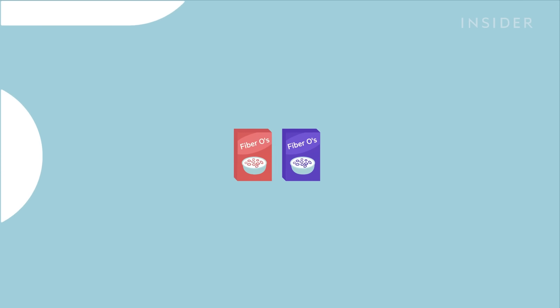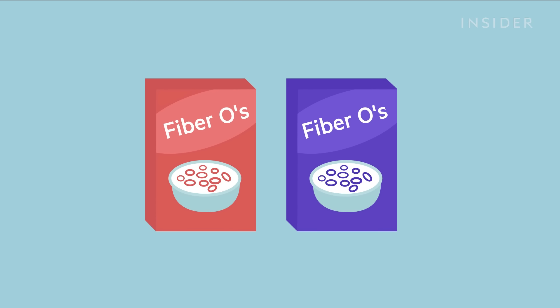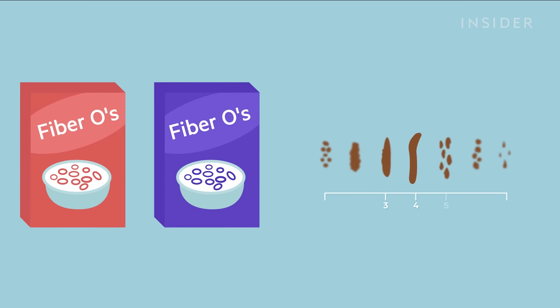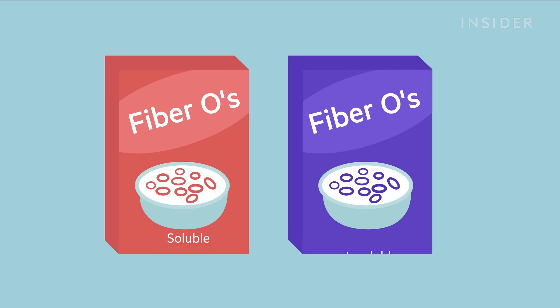What you eat can also help. Yep, we're talking fiber. Fiber is helpful no matter which end of the stool scale you're on, but not all fiber is created equal. There are actually two main types, soluble and insoluble.